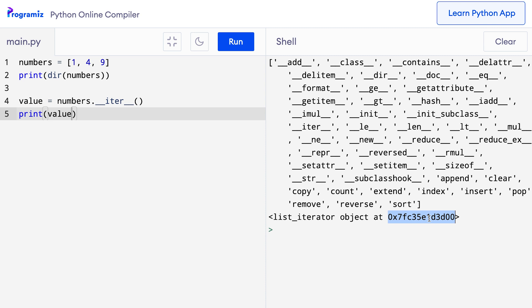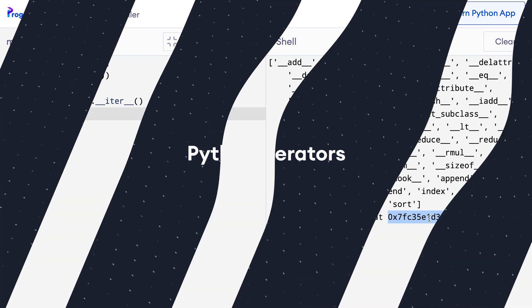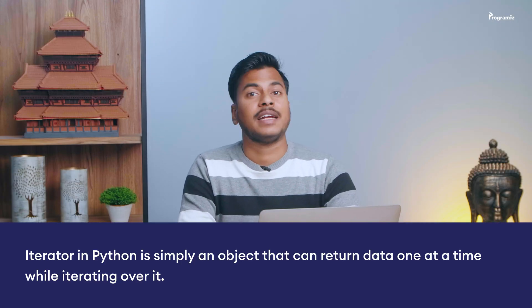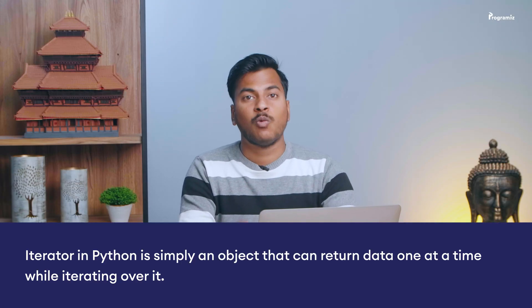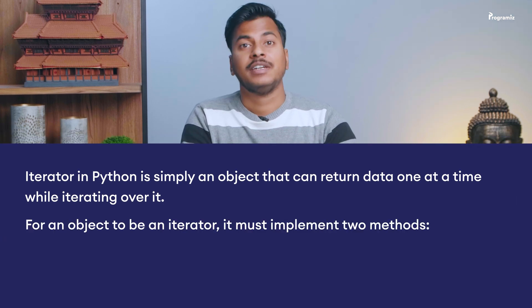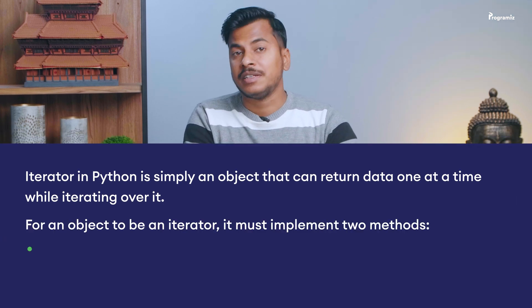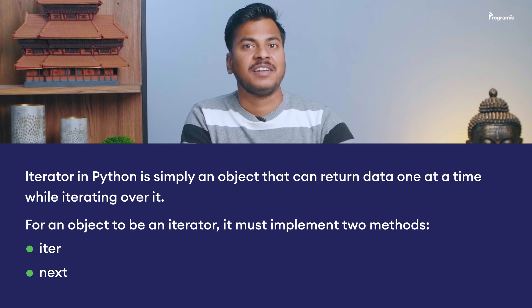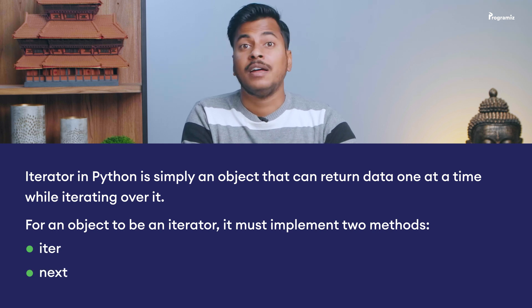Next, we will see what iterator objects are. An iterator in Python is simply an object that can return data one at a time while iterating over it. For an object to be an iterator, it must implement two methods: `__iter__` and `__next__`. These are collectively called the iterator protocol. Now we will look into the next method in detail.